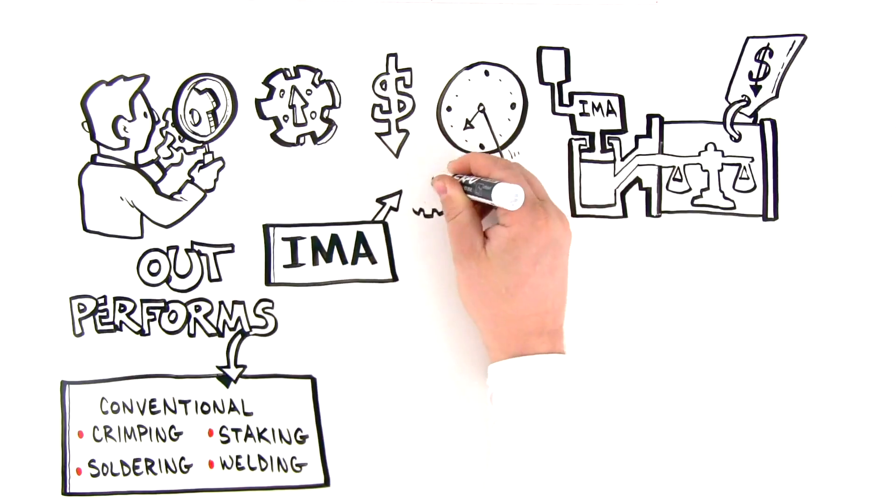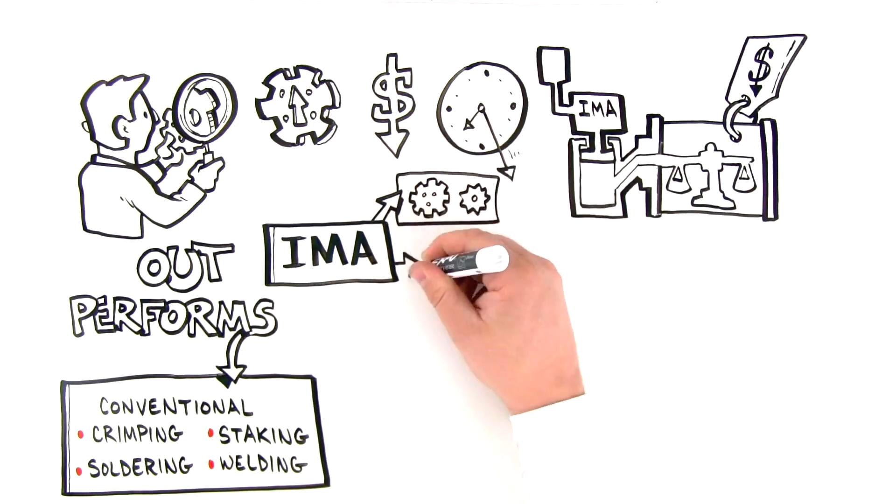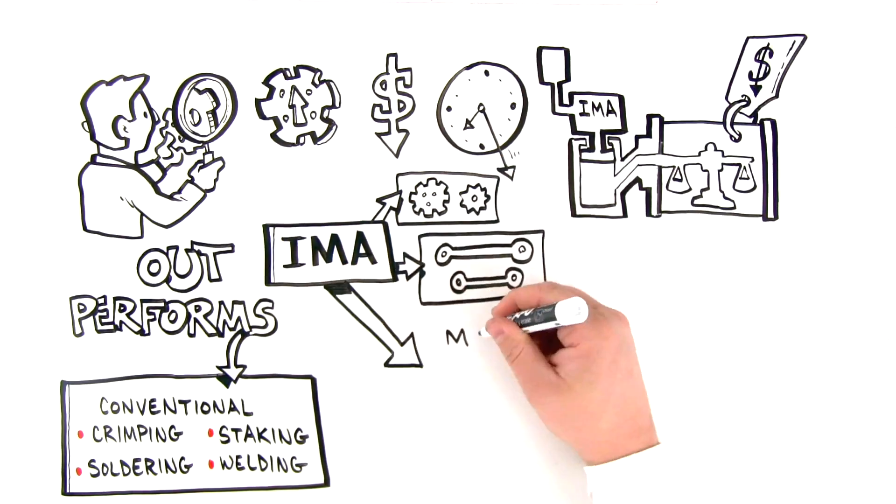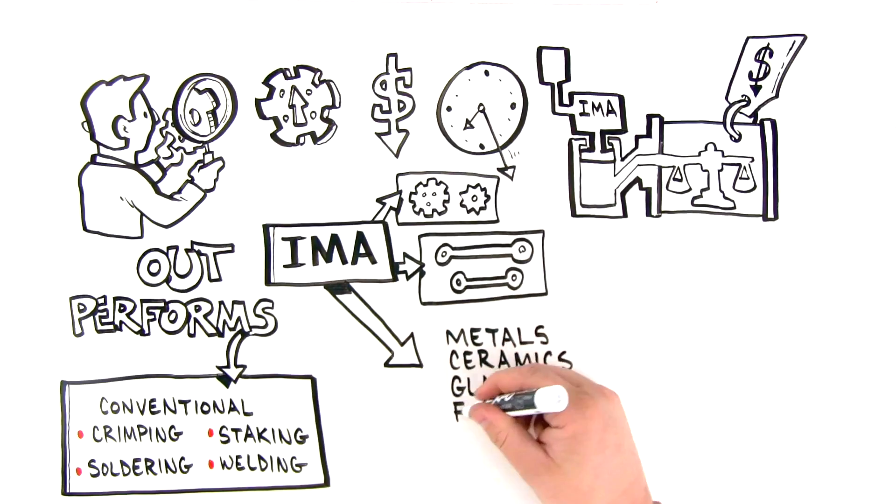IMA is well-suited for assembly components of different shapes, sizes and materials, including metals, ceramics, glass, fibers, paper, elastomers and plastics.